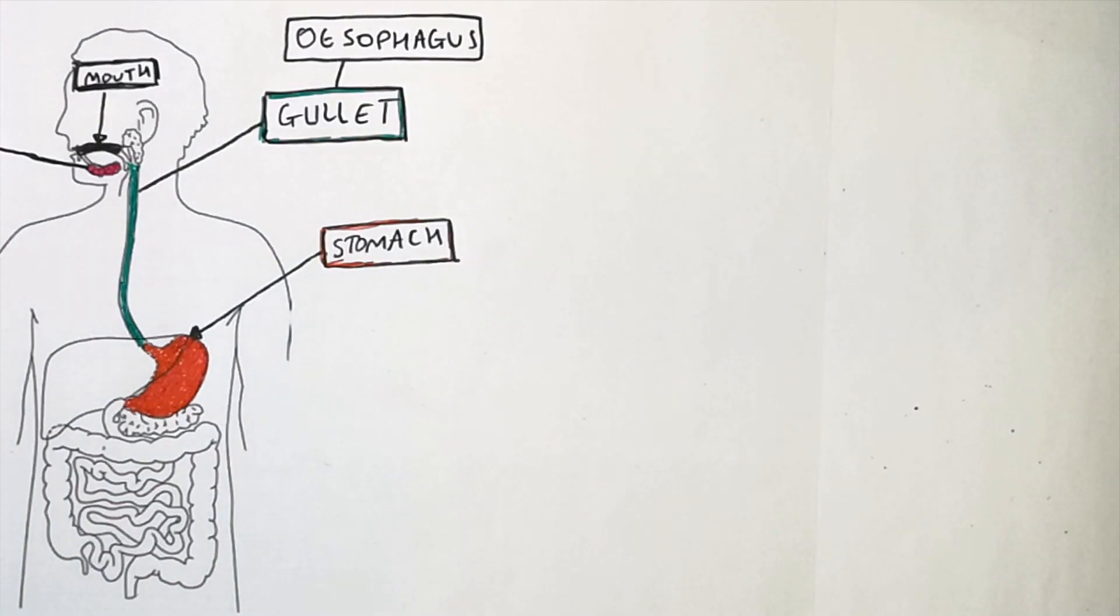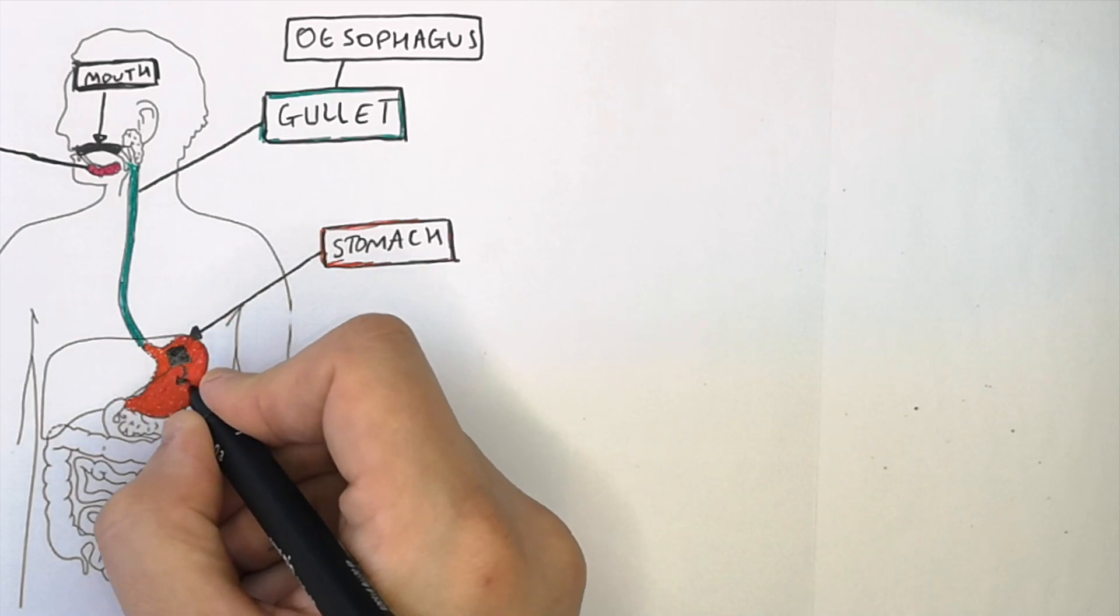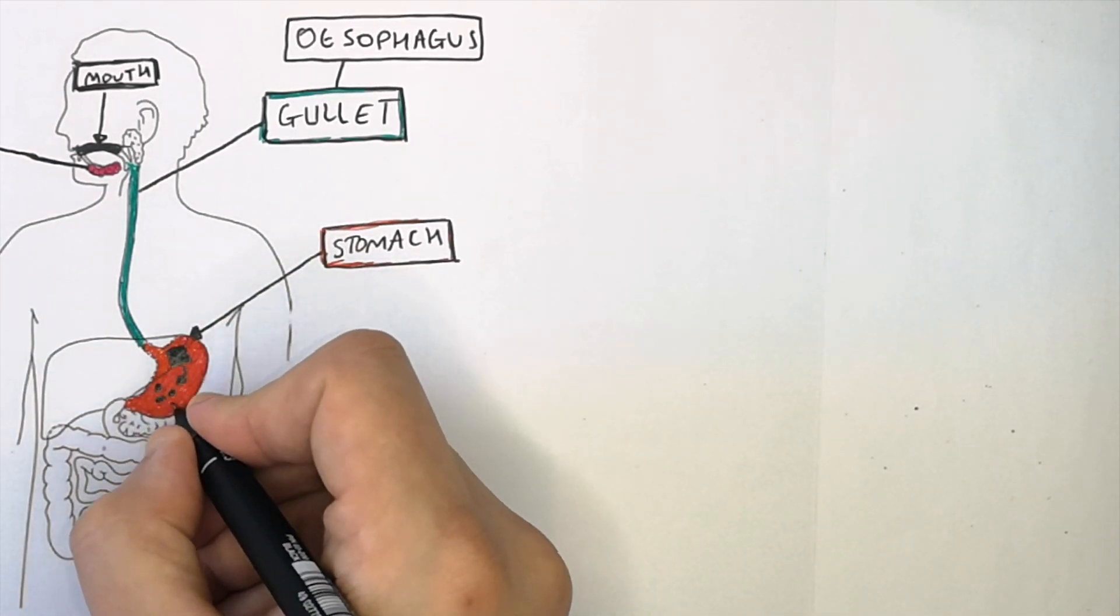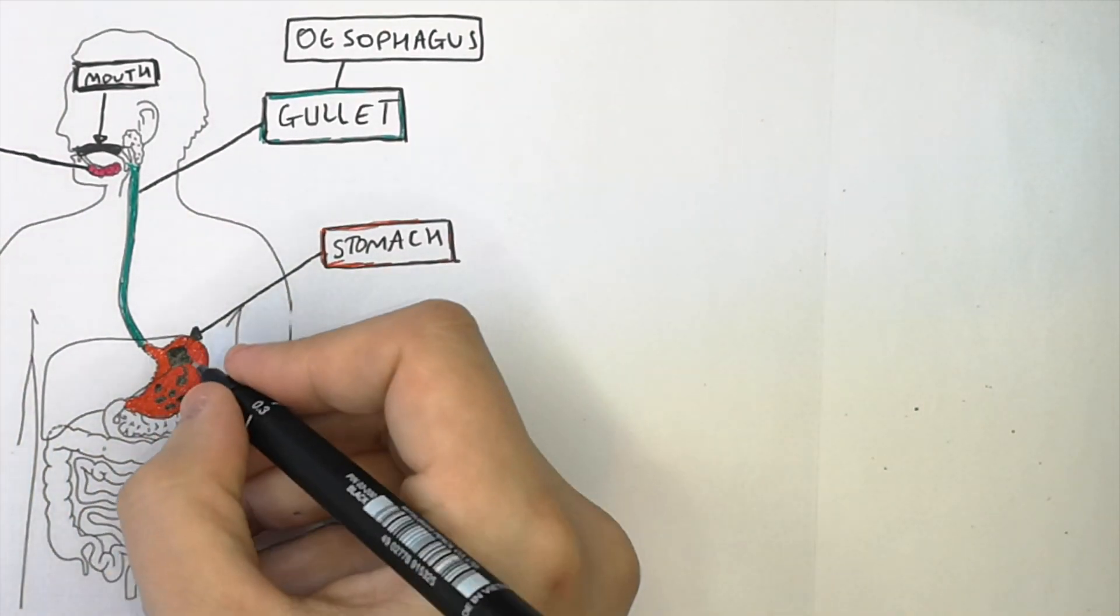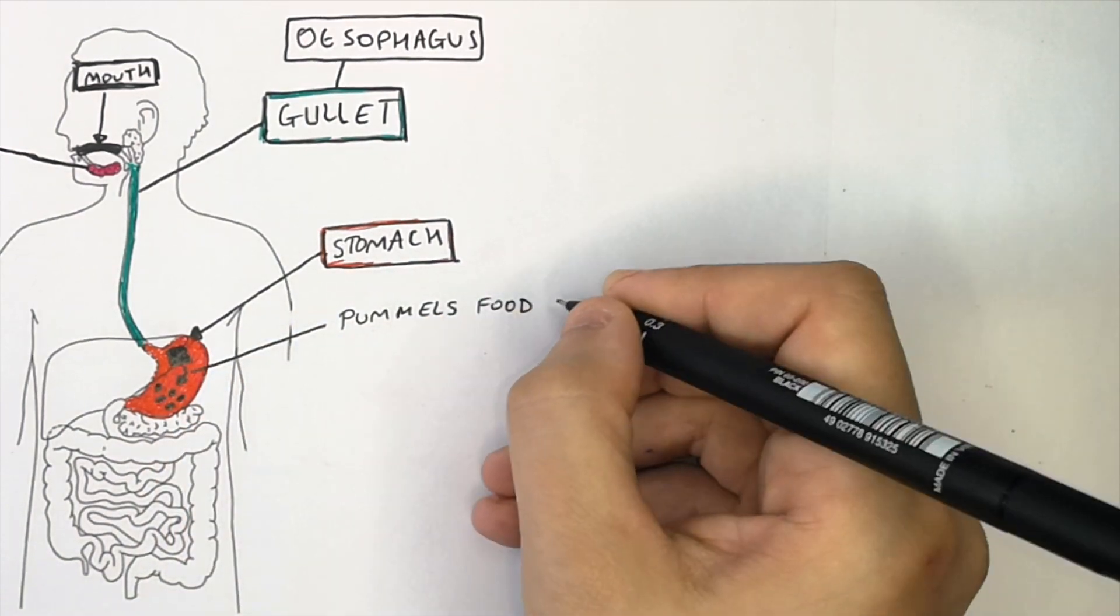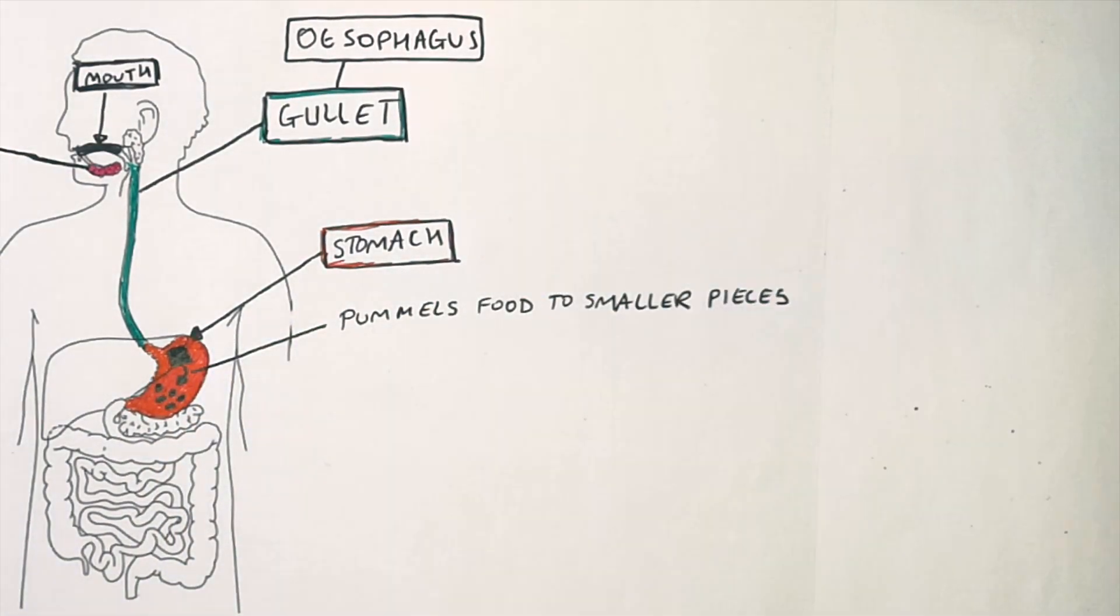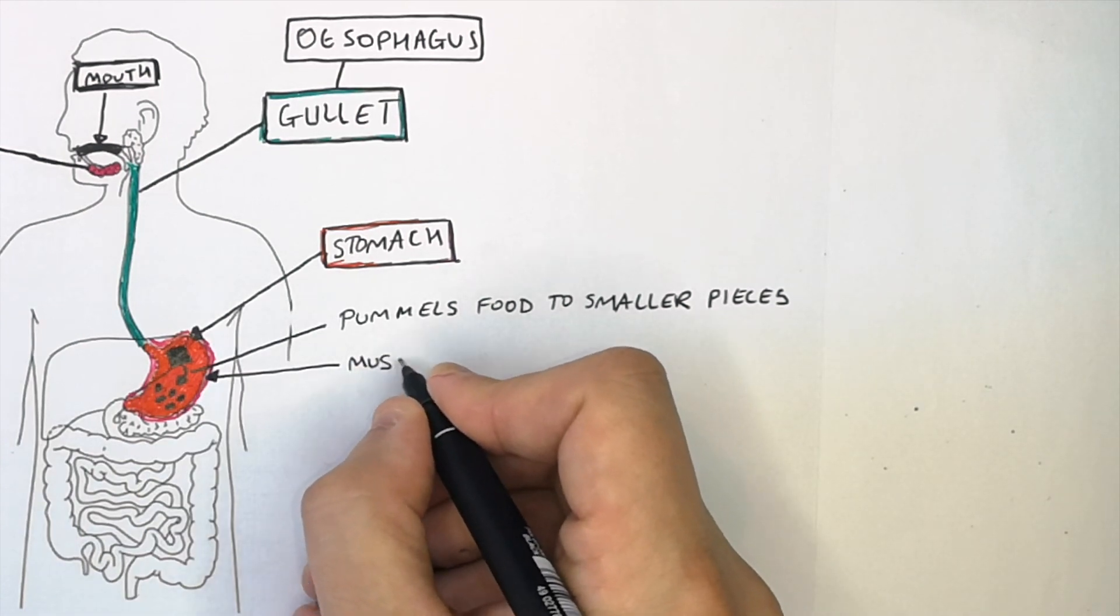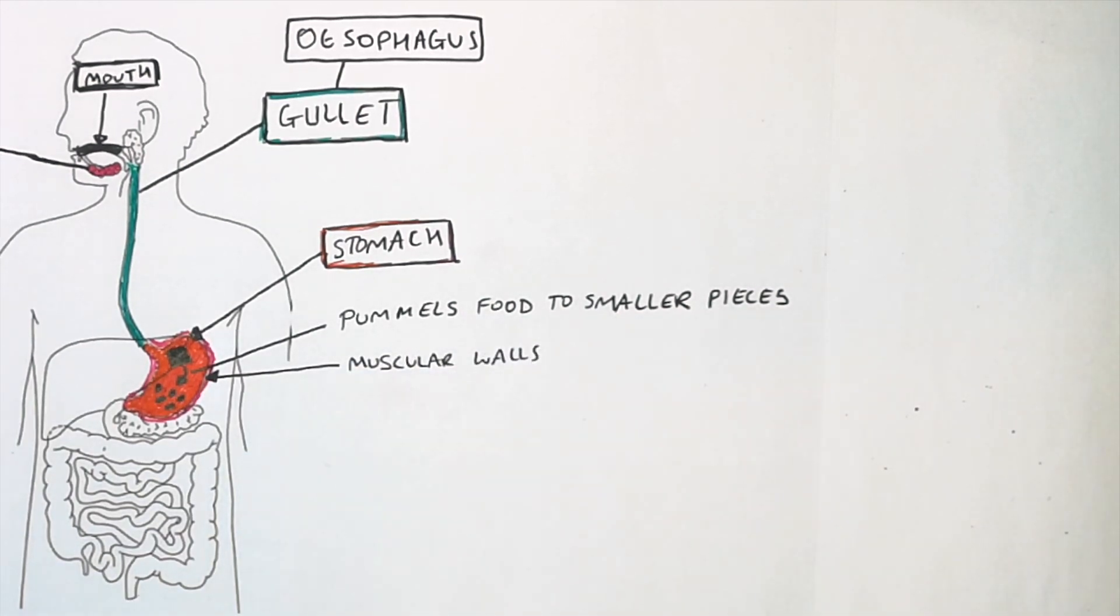Your stomach is an organ that pummels food from larger to smaller pieces. It uses muscular walls to churn the food and break it down to smaller pieces.